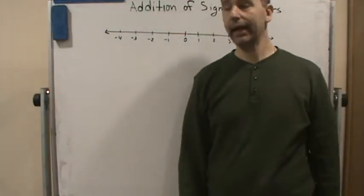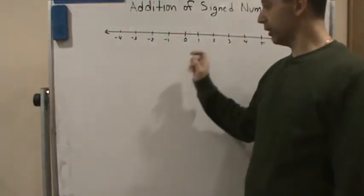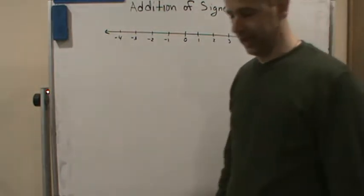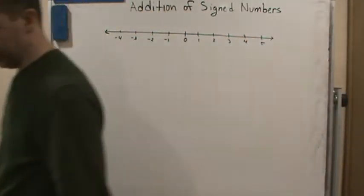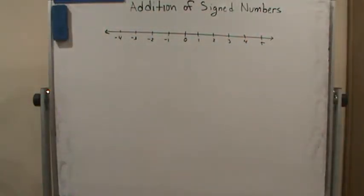Welcome back. Now we're going to do a couple of examples here. I have the number line on the board. It says on the number line, four is to the right of one.